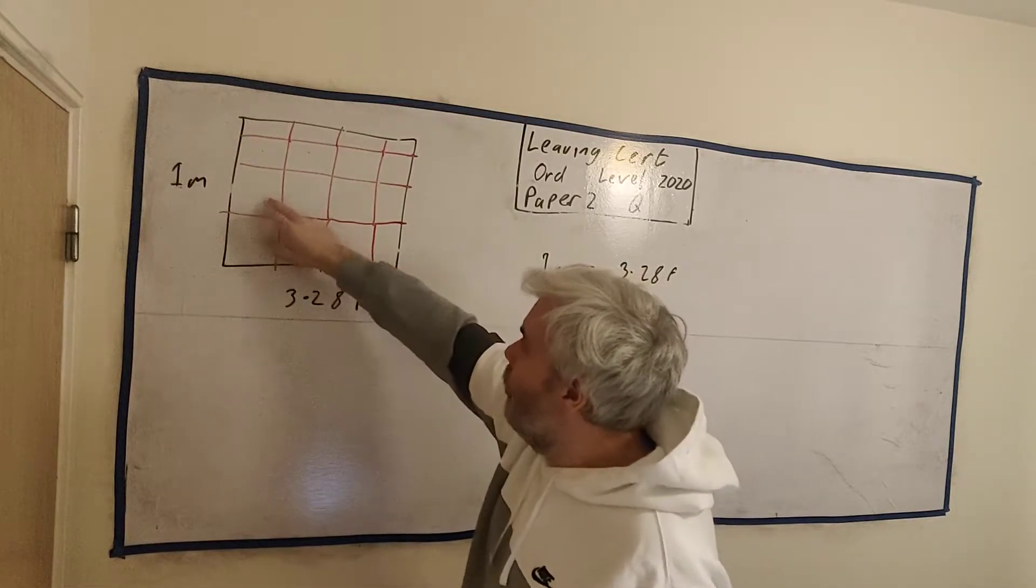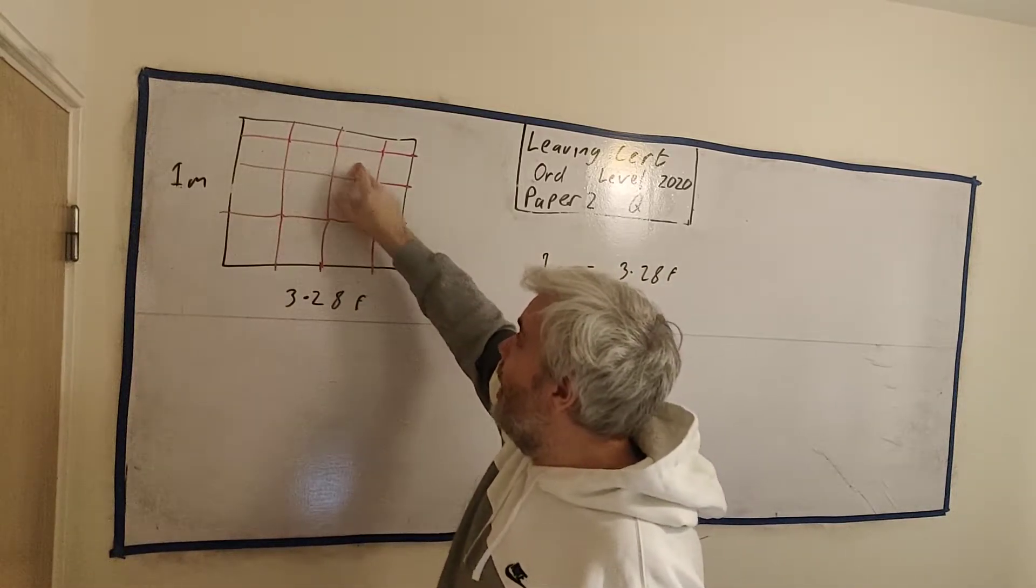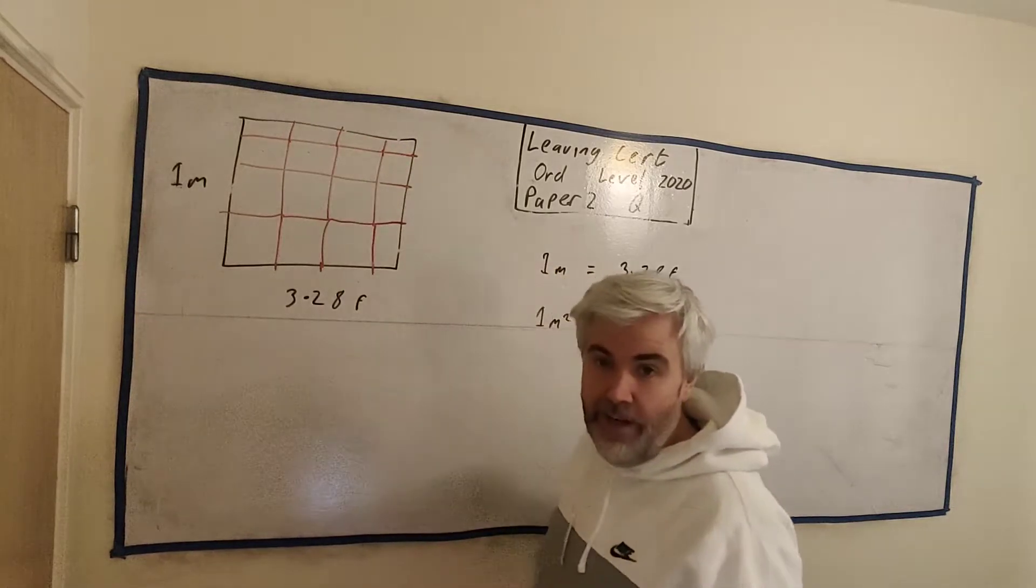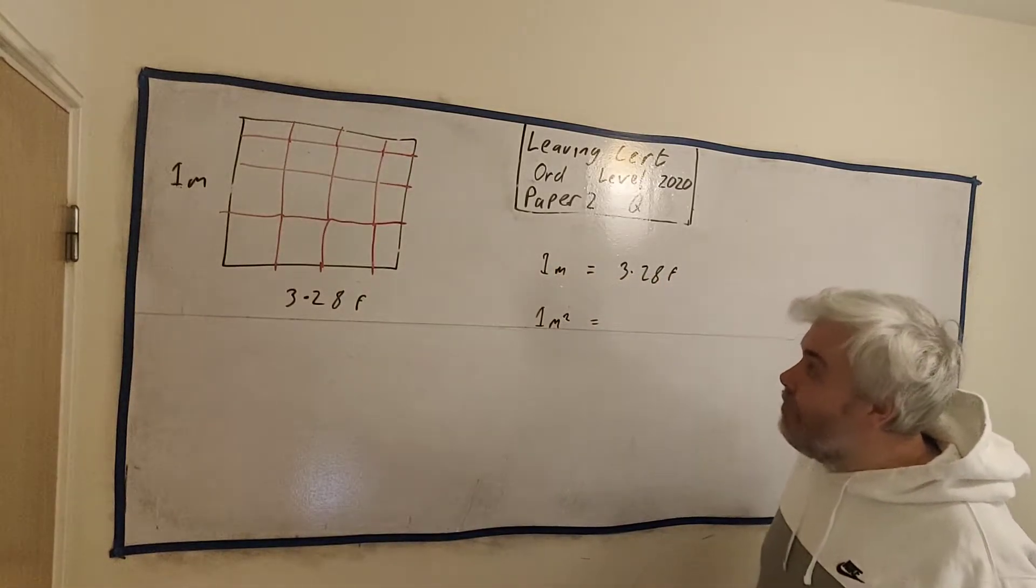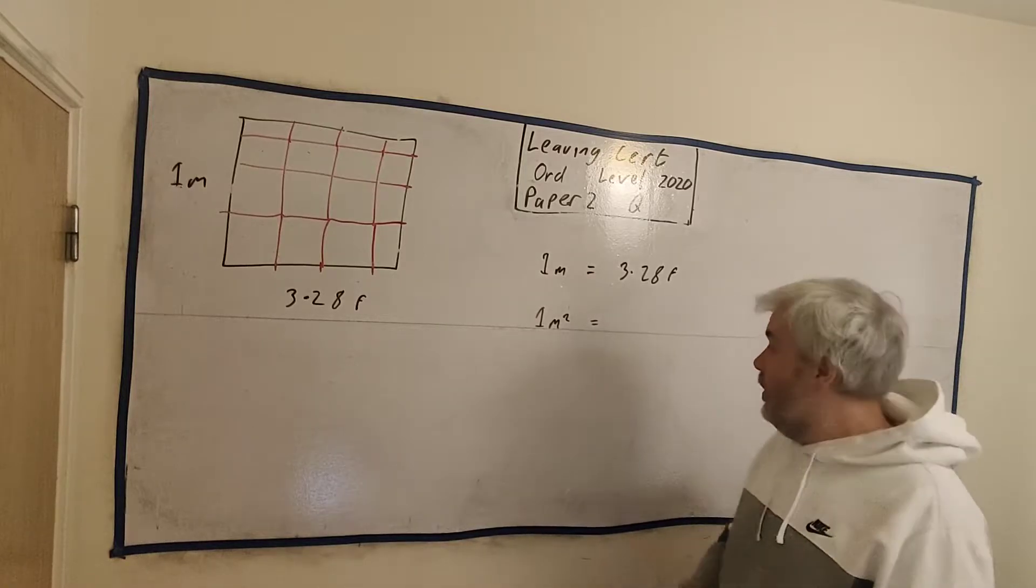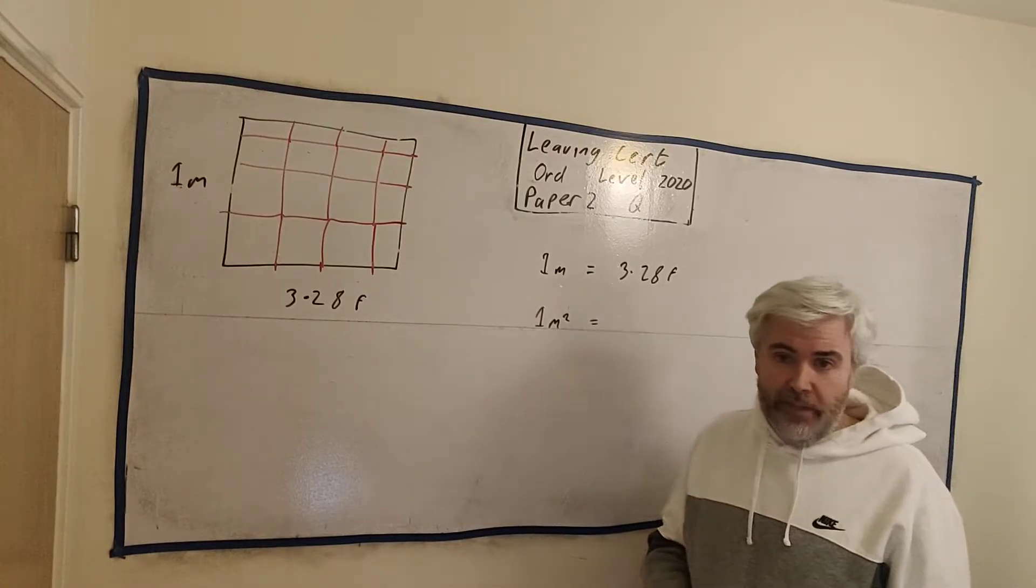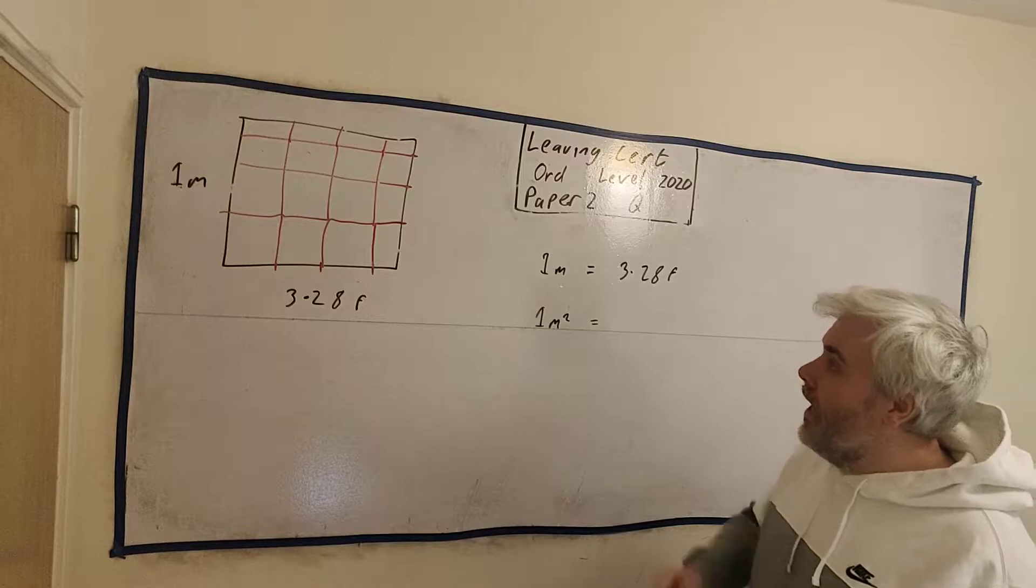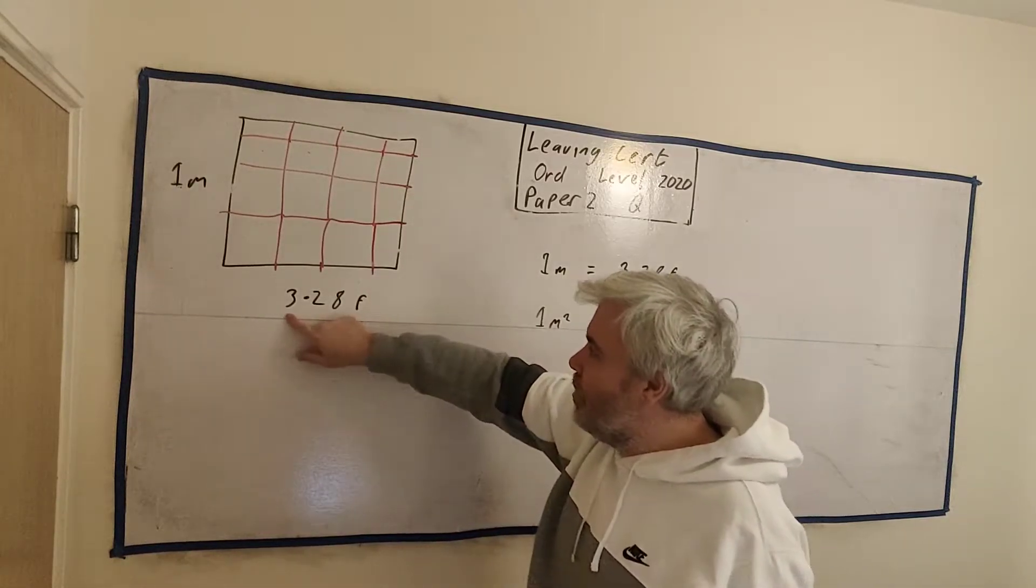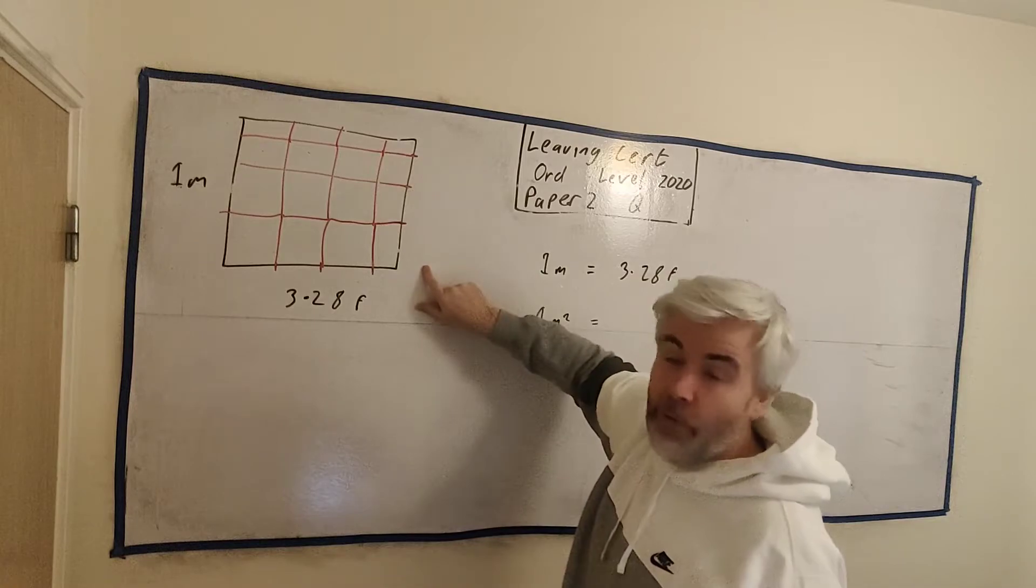So there's 1, 2, 3, 4, 5, 6, 7, 8, 9, and then a little extra. Little bits extra everywhere. So there's probably 10, maybe 11 square feet in there. So we can see that that number is not correct. The correct way to do it is, how many square feet are in this box? We just multiply 3.28 by 3.28.